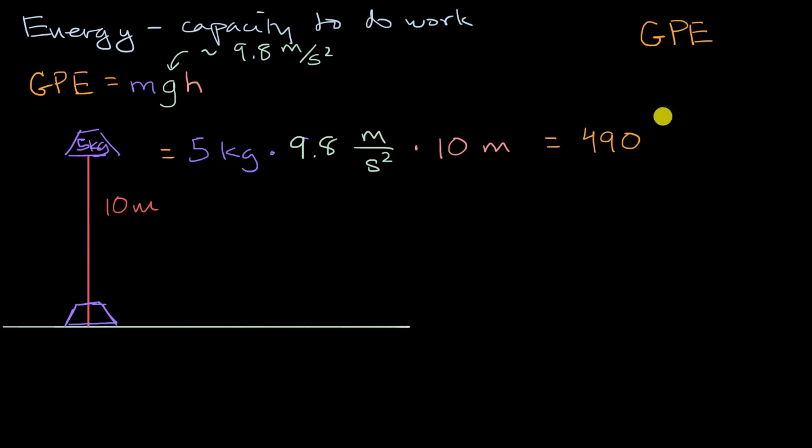We have kilograms, and then we have meters times meters, so times meters squared per second squared. These might seem like strange units, but you might recognize this as also the units of force times distance, which we could also express in terms of joules. So this is 490 joules, which is our unit both for energy and our unit for work.